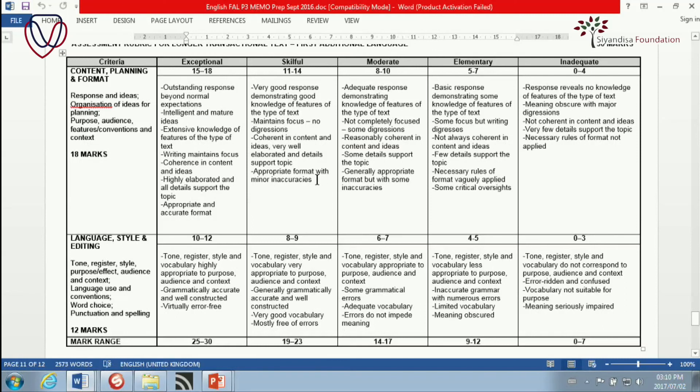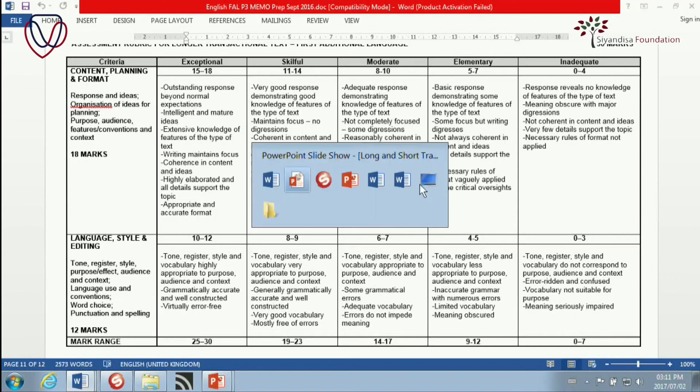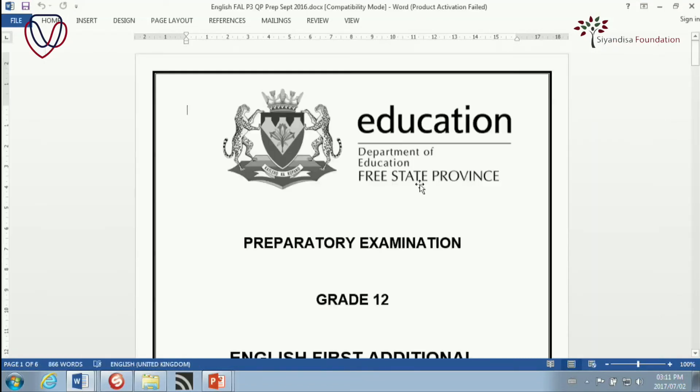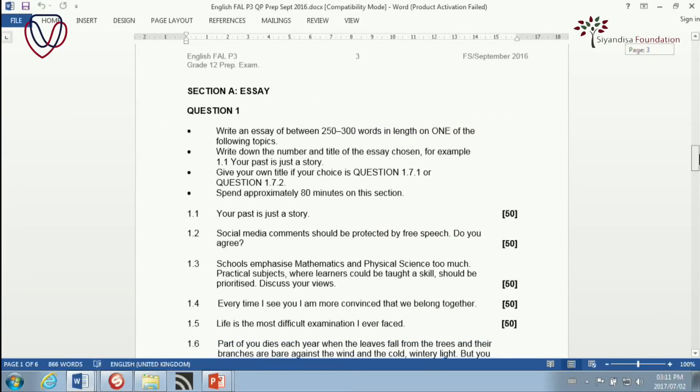Look also over here. Necessary rules of format vaguely applied. Some critical oversights. Format matters. Please take note of that. You cannot get an exceptional result if there are any errors in the format. So the best thing to do is either to make sure that you're an expert in the format or choose something which has a simple format. Now, I'm just watching the time. Yes, we have a few minutes remaining. There's your method of the marking. Now, let's go to our question paper. And take a look at the actual questions given in an exam along with some of the answers recommended.